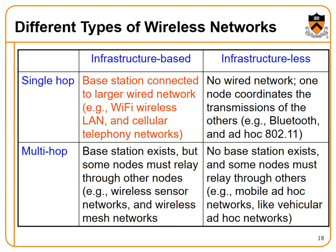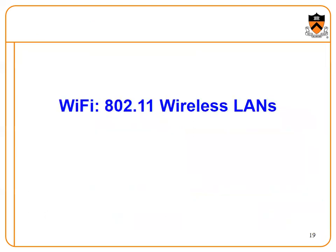In multi-hop networks, a base station exists, but some nodes must relay through other nodes — for example, wireless sensor networks and wireless mesh networks. Infrastructureless multi-hop has no base station, and nodes must relay through others — for example, mobile ad hoc networks and vehicular ad hoc networks.